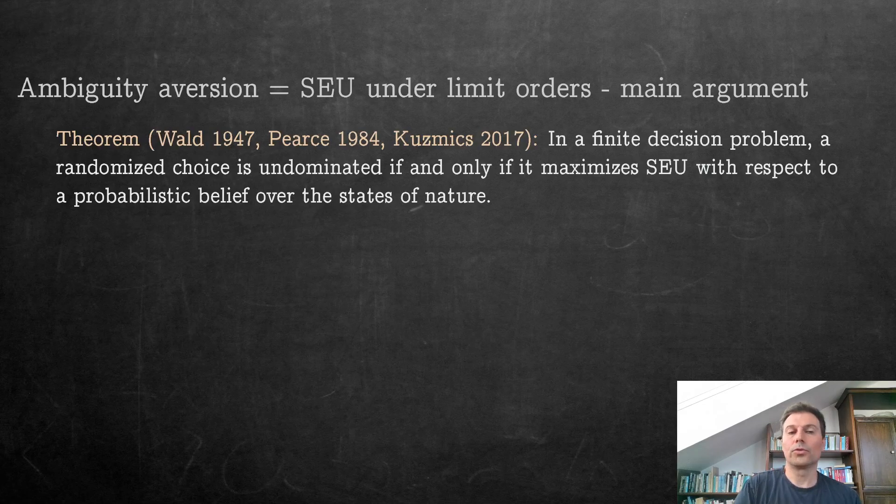So what's the main argument? We go back to an old theorem by Abraham Wald. This is called the complete class theorem, and it's popular in game theory as Pearce's Lemma in 1984 in the rationalizability paper. My name is there because I retranslated basically the original translation from decision theory to game theory back to decision theory. But what does it say? It says that in a finite decision problem—finite states, finite choices—a randomized choice is undominated if and only if it maximizes subjective expected utility with respect to a probabilistic belief over the states of nature.